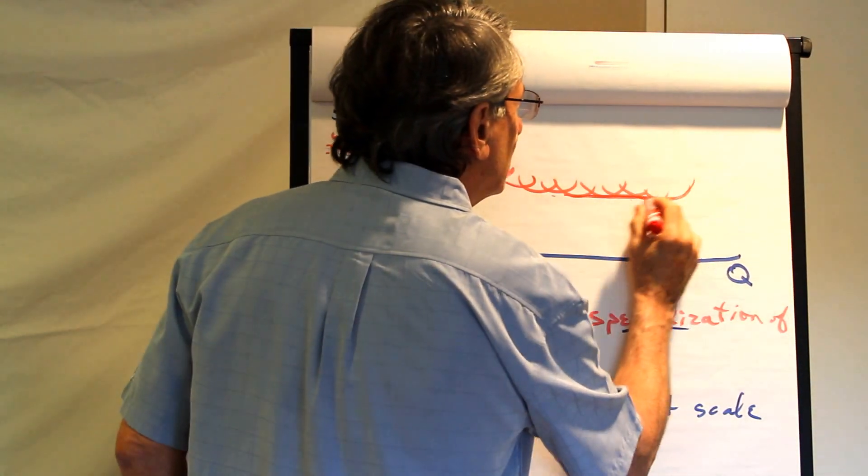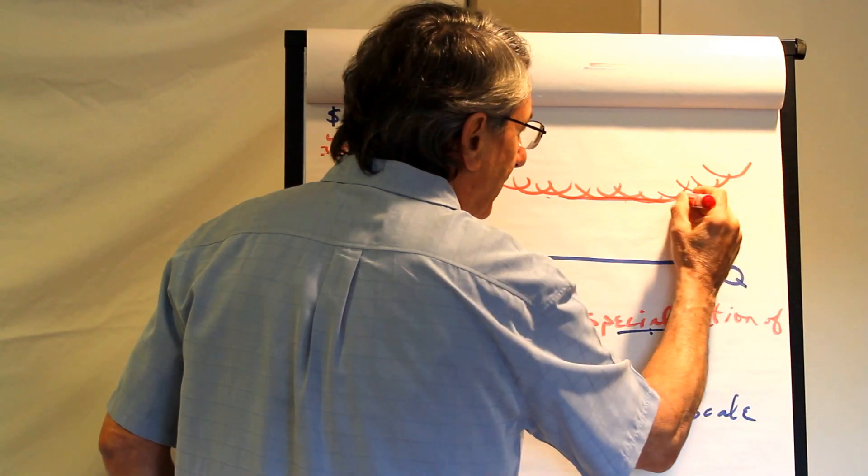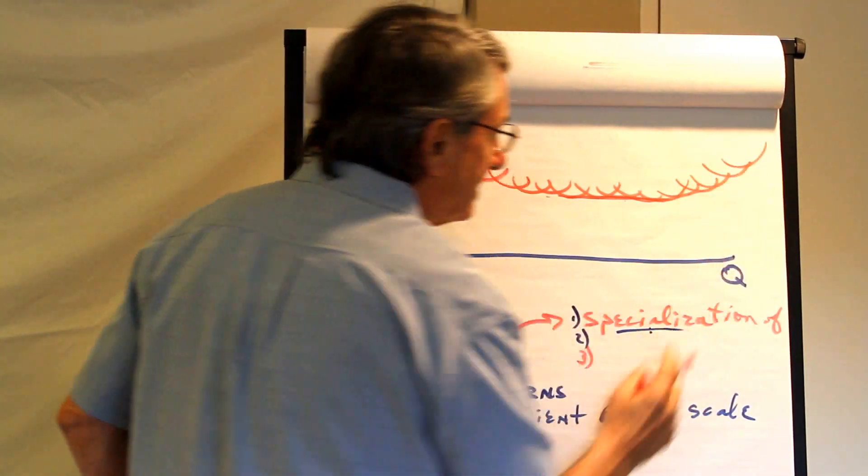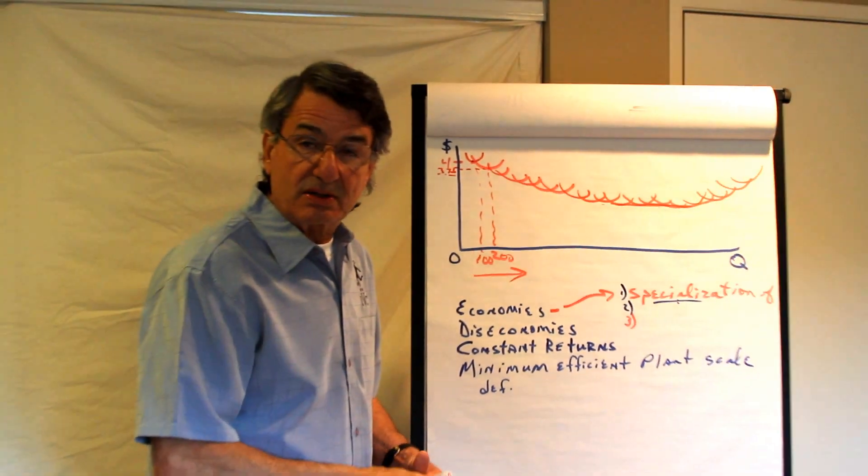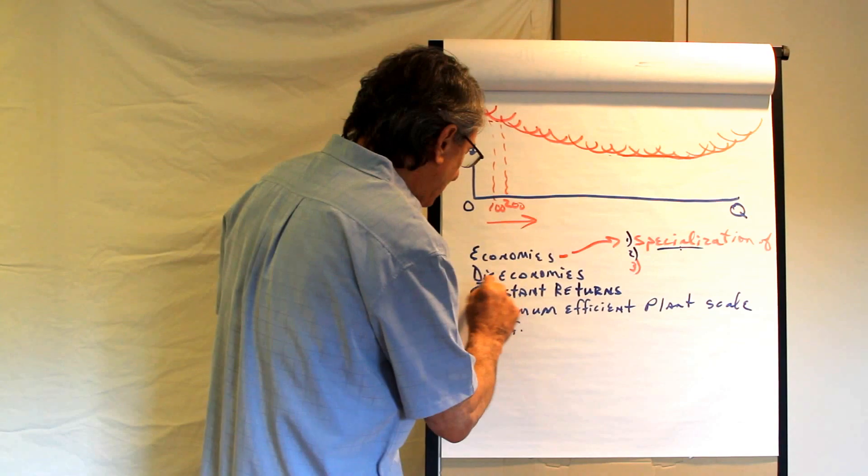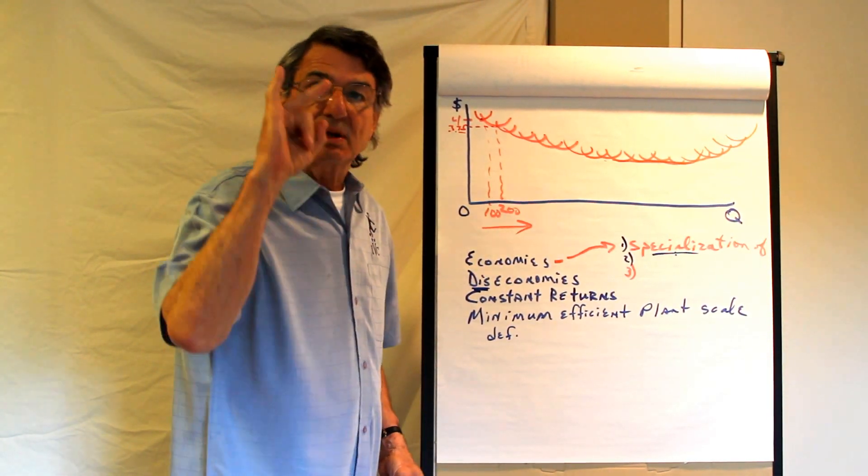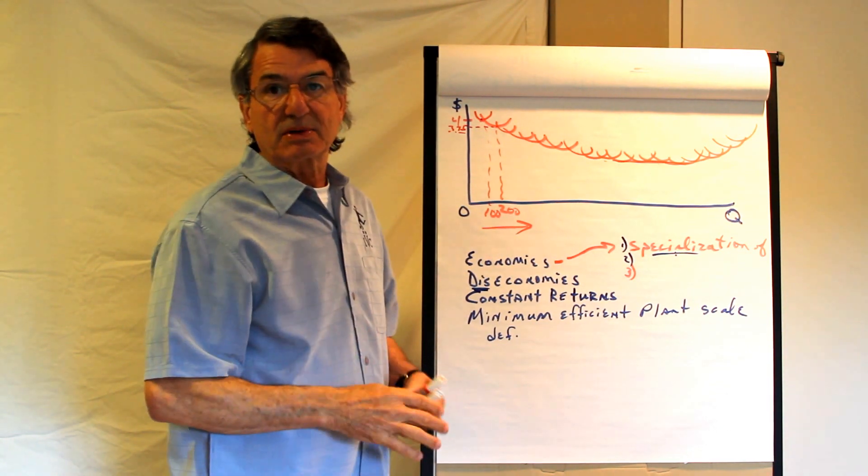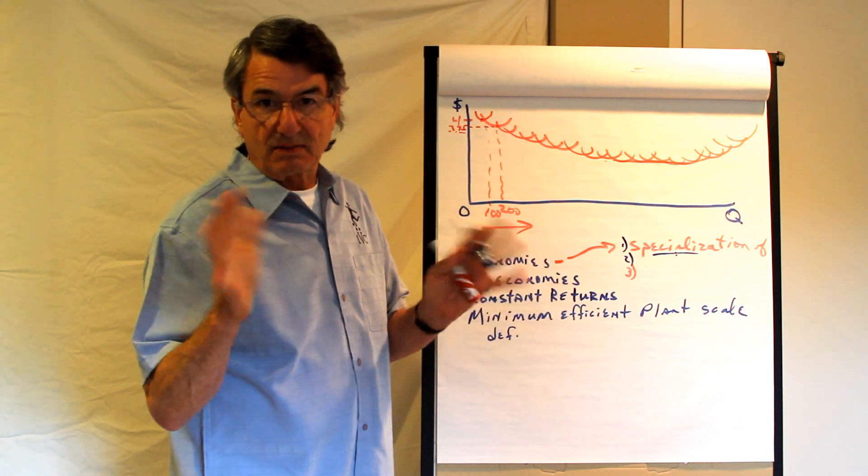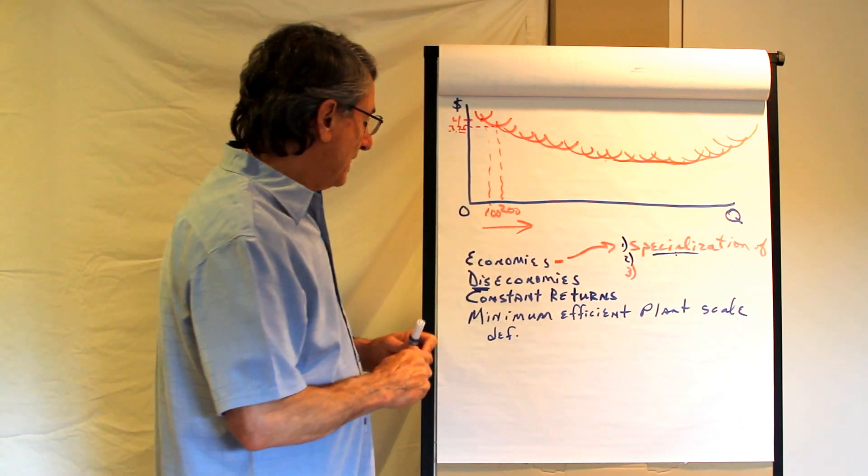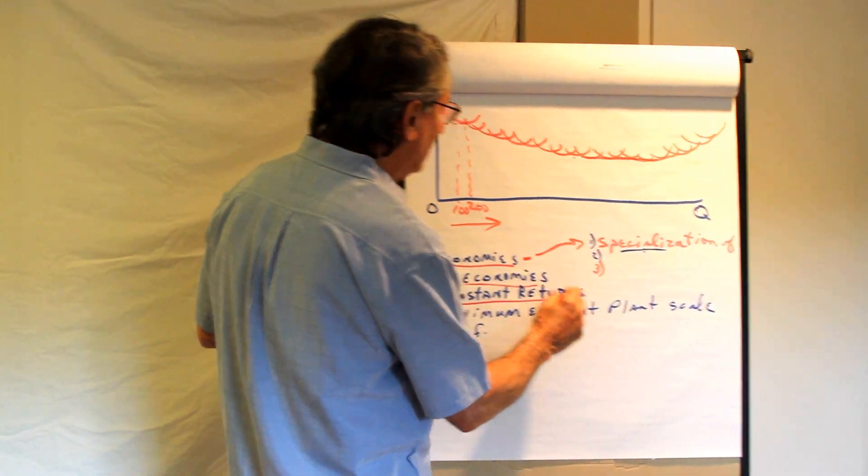This is constant returns to scale. And then finally oftentimes industries have never found this point, but theoretically it exists that they build a bigger and bigger scale plant and all of a sudden their costs start increasing and this is diseconomies of scale. Diseconomies of scale come about because of information and organization problems. It becomes so large that it cannot be managed and so costs increase because of this coordination problem.